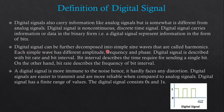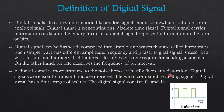A Digital Signal can be further decomposed into Simple Sine Waves called Harmonics. Each Simple Wave has different Amplitude, Frequency, and Phase. A Digital Signal is described with Bit Rate and Bit Interval — the interval between two bits. Bit Interval describes the time required for sending a single bit, while Bit Rate describes the frequency of Bit Interval. A Digital Signal is more immune to noise because it only has 0s and 1s, so it hardly faces any distortion.